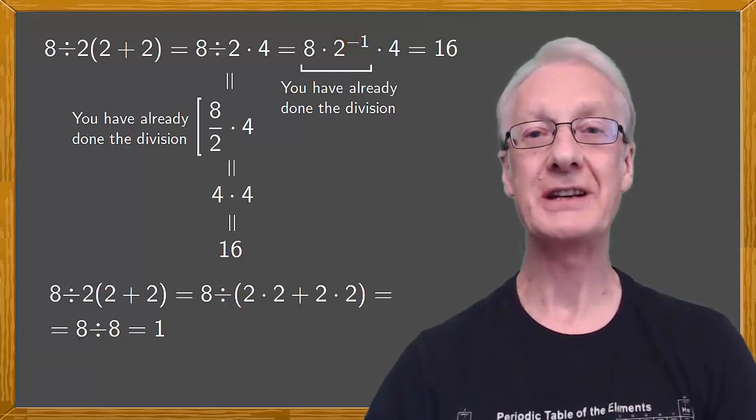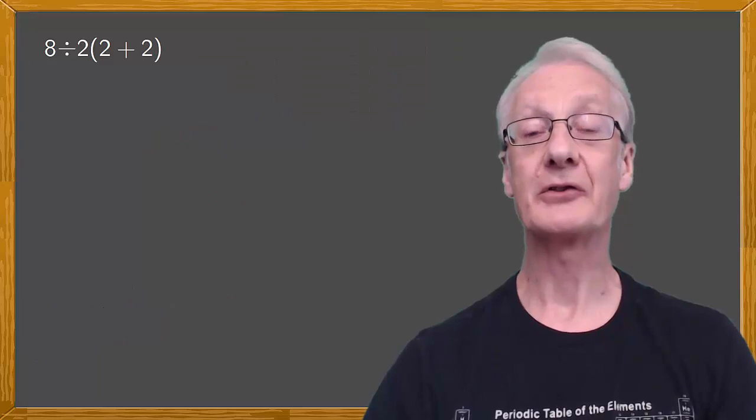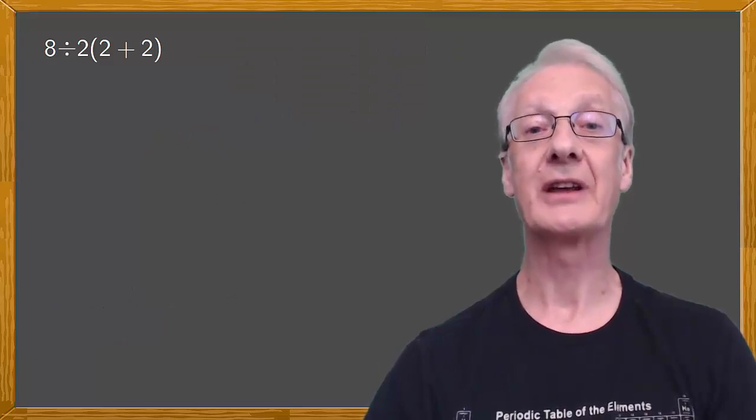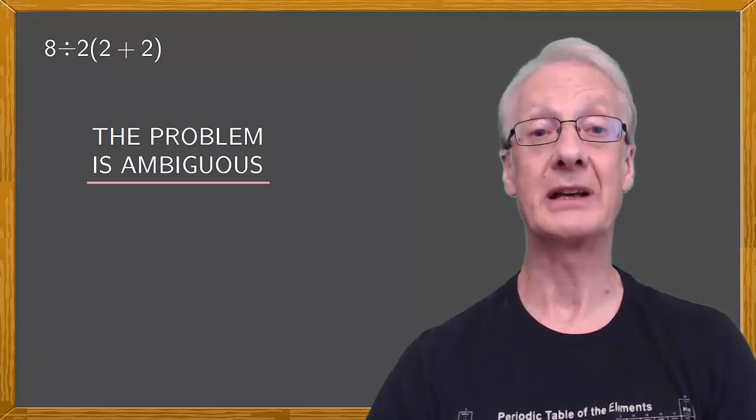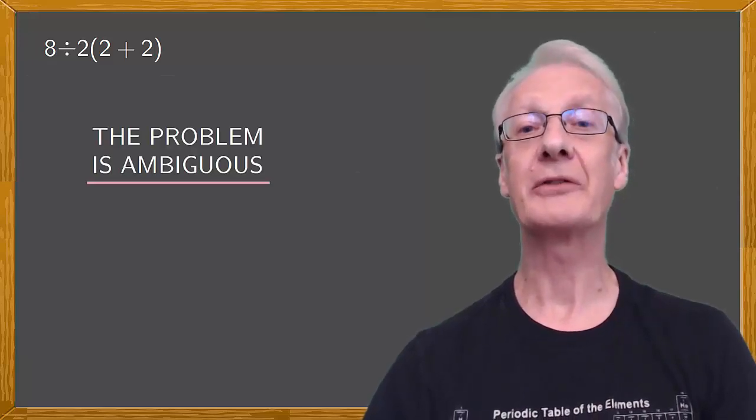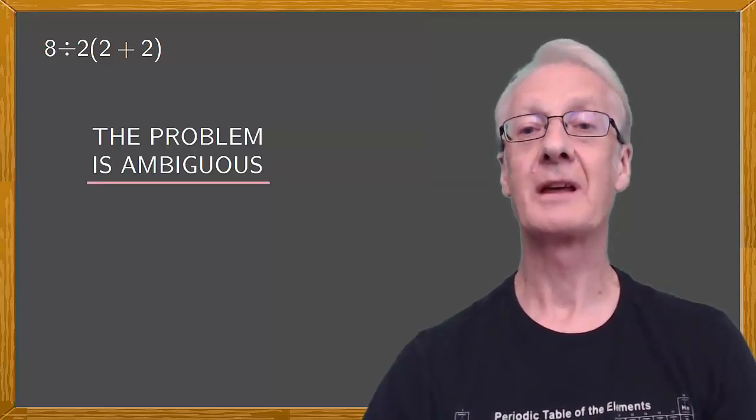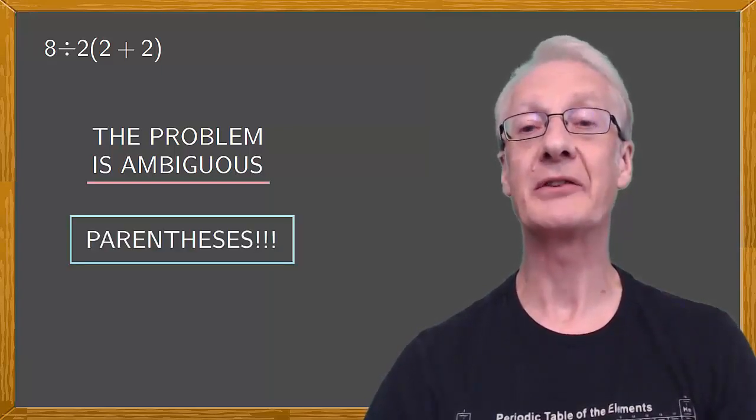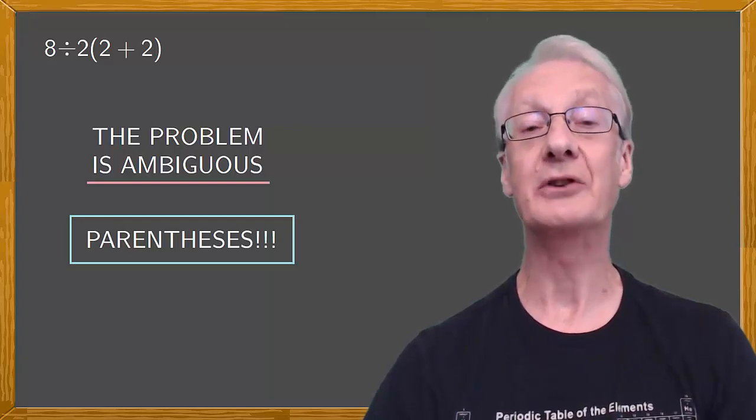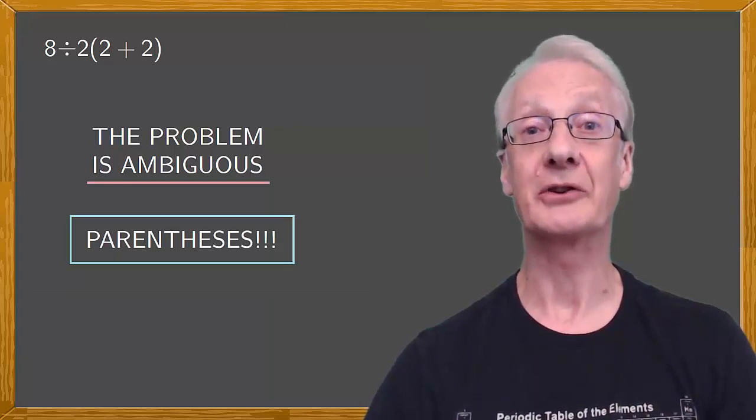Perhaps the controversy will continue. But in the end, there's only one final answer to this, and that is that the problem in its original form is ambiguous. Forget whatever rules you've learned. The mathematics is clear. Without an additional set of parentheses, there's no way of knowing whether the division or multiplication should be done first.